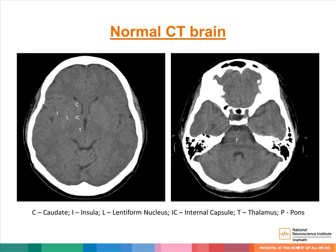This slide shows the normal appearance of a CT brain at the level of the basal ganglia on your left and at the level of the cerebellum on your right. Soft tissue appears grey, with the white matter appearing slightly darker than the grey matter. CSF appears black. Bone and calcification appear white.